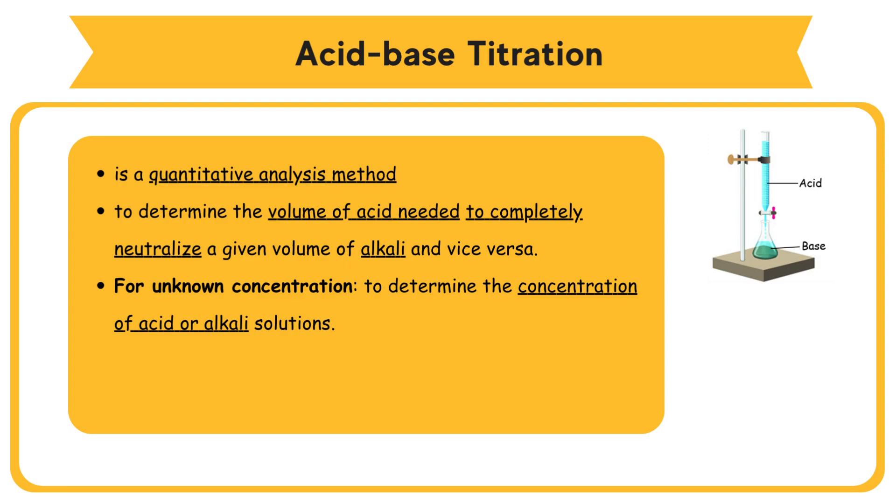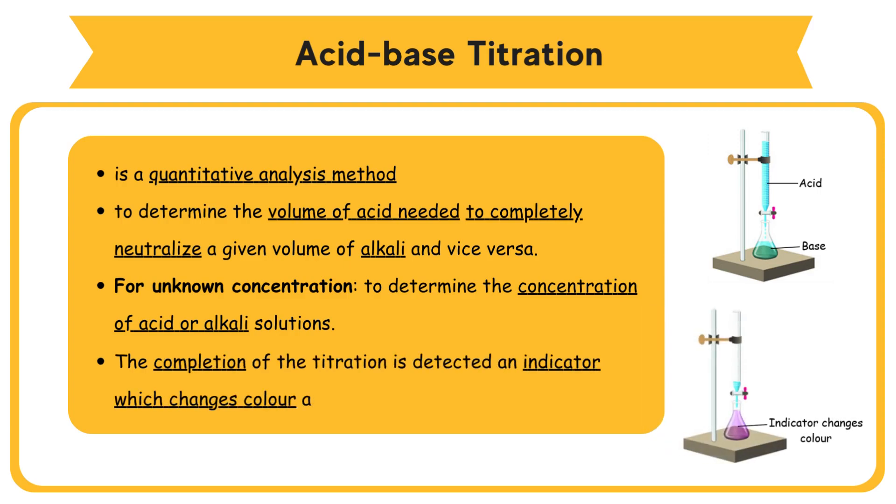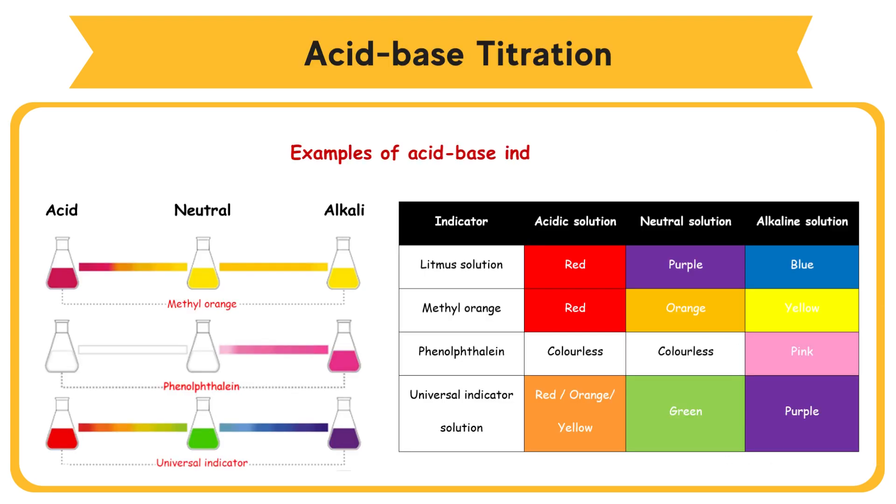A solution of known concentration is slowly added from a burette into a conical flask that contains a volume of alkali of unknown concentration. The completion of the titration is detected by an indicator, which changes color at the end point. Examples of acid-base indicators.